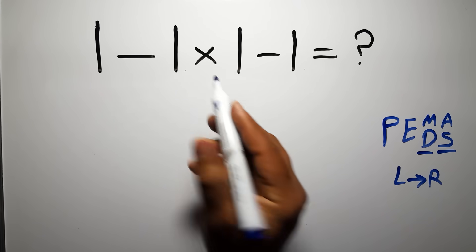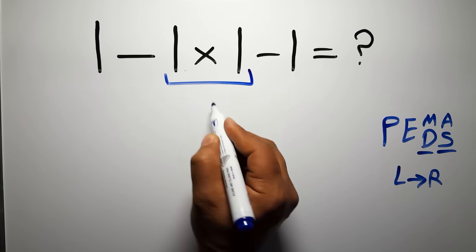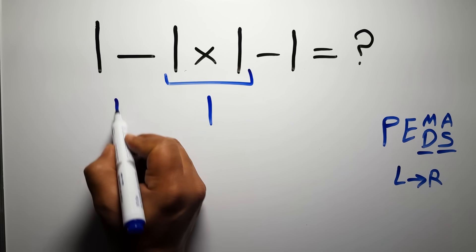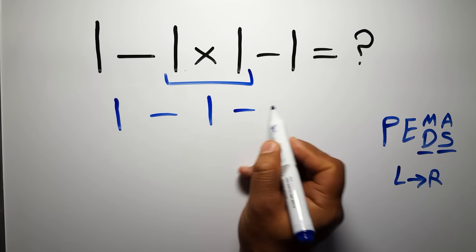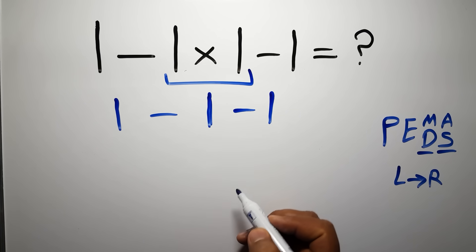So first this multiplication: 1 times 1 gives us 1, so we have 1 minus 1 and again minus 1. Now we have 2 subtractions.